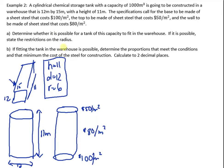Part A: determine whether it's possible for a tank of this capacity to fit in the warehouse. If it's possible, state the restrictions. So we kind of already did that. The height is 11, the diameter is 12, and the radius is 6. So the radius has to be between, it can't equal 0, has to be between 0 and up to 6 and including 6.